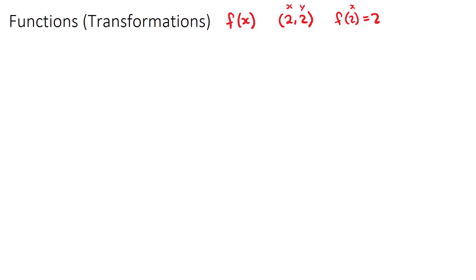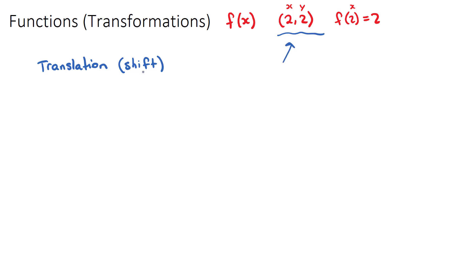The first type of transformation in this topic is called a translation. Translation is just a fancy word for shift. So if you see the word translation, you need to be thinking we're going to be shifting our function — all of the points on our function — either left and right (horizontal shift) or up and down (vertical shift).